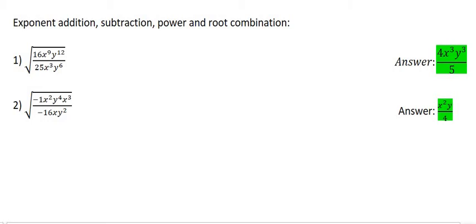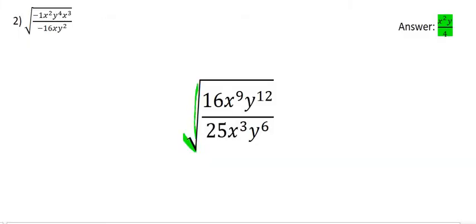Let's start with number 1. With a question like this, you can ignore the square root for the first part, and we can first put all the x's and the y's together. The 16 and the 25, we can't do anything with them because 25 doesn't go into 16, and there's no number that can go into both.